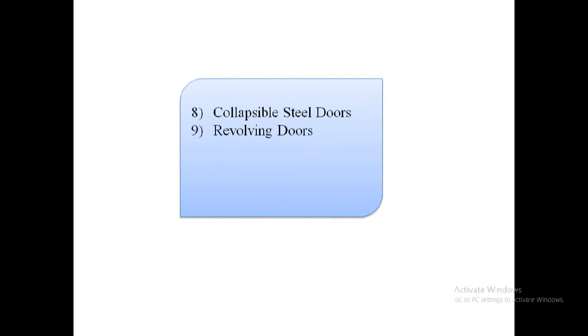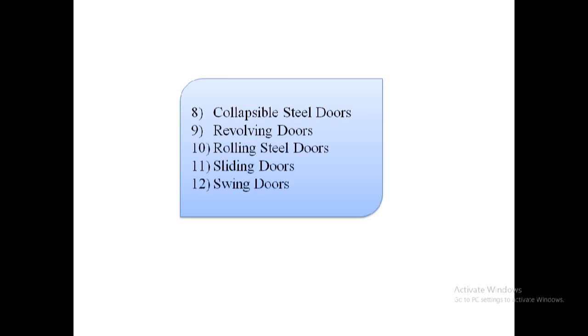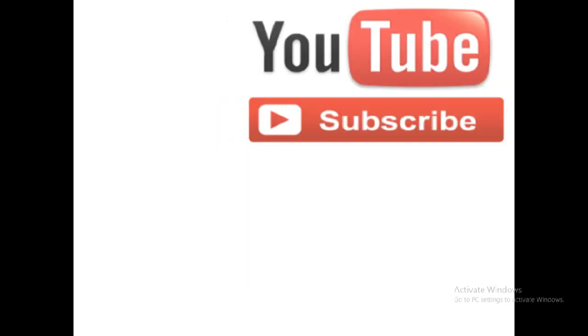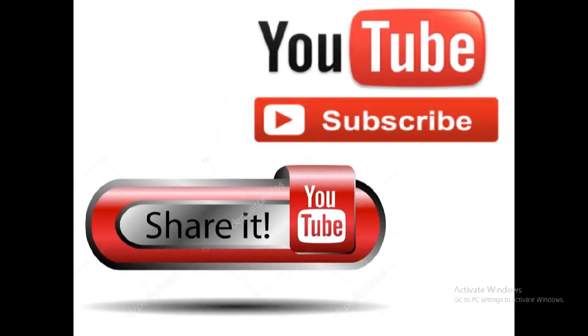This video ends here. In the next video we will discuss remaining types of doors: collapsible steel doors, revolving doors, rolling steel doors, sliding doors, and swing doors. Thanks for watching. I hope this video will be helpful for you. For more updates, subscribe to my channel and don't forget to share this video with your friends.